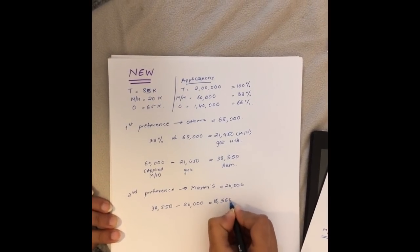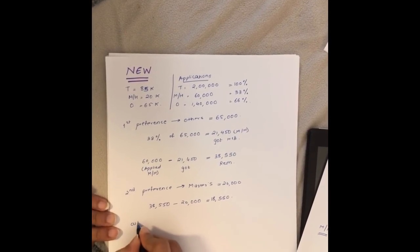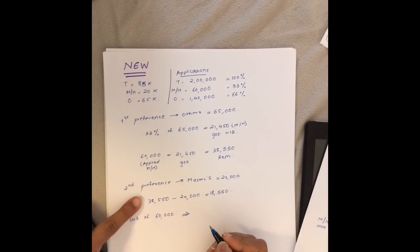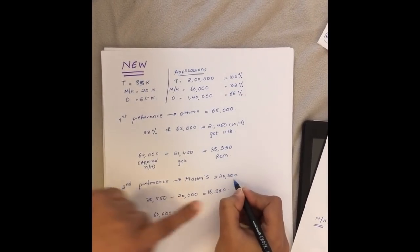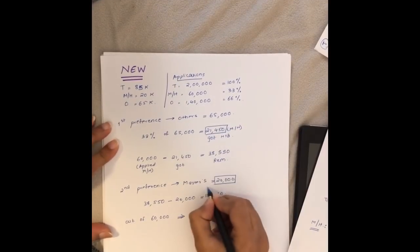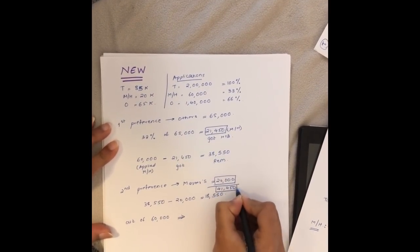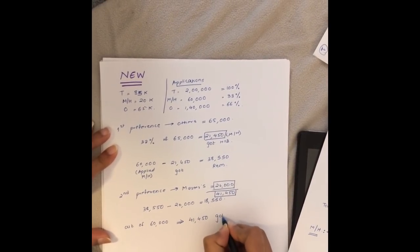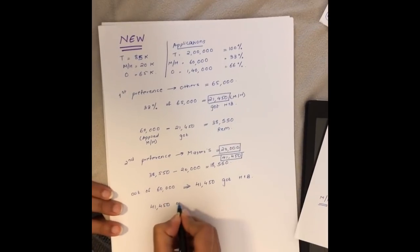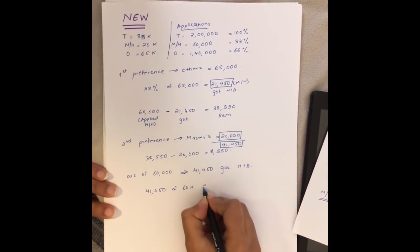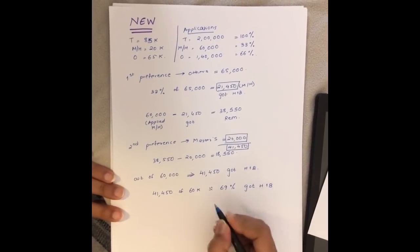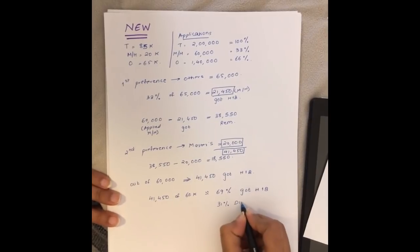Summing it up, out of 60,000 total applicants for masters, in total you have 20,000 plus 21,450, which equals 41,450 who got H1B. So 41,450 of 60k estimates to 69 percent got H1B, and 31 percent did not get H1B.